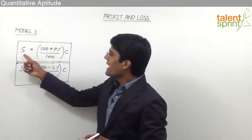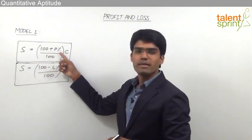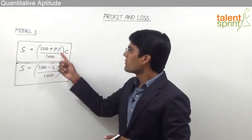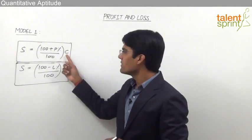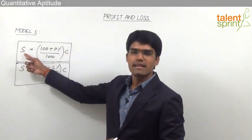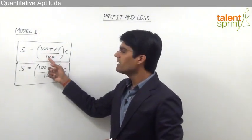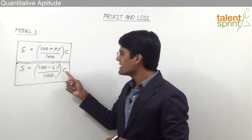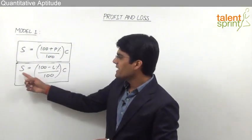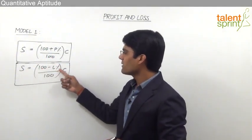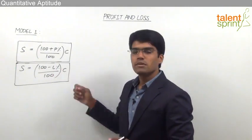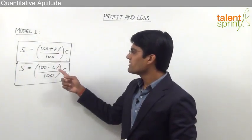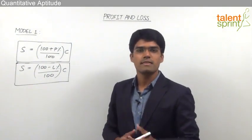Selling price can be taken as (100 + profit%) / 100 × C. So whenever profit percentage and cost price are given, selling price S = (100 + profit%) / 100 × C. Similarly, whenever loss percentage and cost price are given, selling price = (100 − loss%) / 100 × C. This is how we can find out the selling price when the profit percentage or the loss percentage with the cost price has been specified.